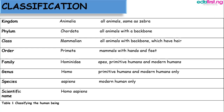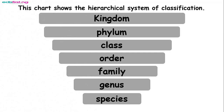The next level is the phylum. Characteristics at this level include: they possess a soft, flat, and unsegmented body; they are bilaterally symmetrical; they have no body cavity; they possess an alimentary canal with a highly branched digestive system, meaning they have no anus. Some are free-living, for example planaria, while others are parasites, for example liver flukes and tapeworms.